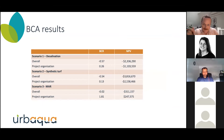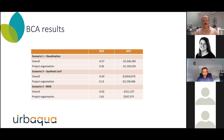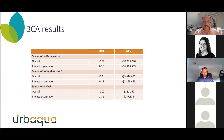Once entered into the BCA tool, the numbers had a lot of big negatives, but it became clear straight away that the managed aquifer recharge option was the only one with a positive net present value and a benefit cost ratio above one. None of them looked particularly good, but this is a local government project about providing amenity to the community — not about big profits. It was pretty clear that managed aquifer recharge was the option to go with.